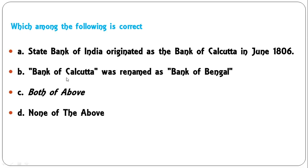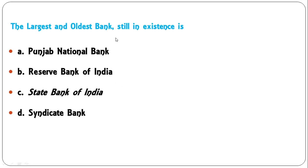Which among the following is correct? State Bank of India originated as Bank of Calcutta in June 1806, and Bank of Calcutta was renamed as Bank of Bengal. Both of the above are correct, so C is the correct answer. The largest and oldest bank still in existence is the State Bank of India, so A is the correct answer.